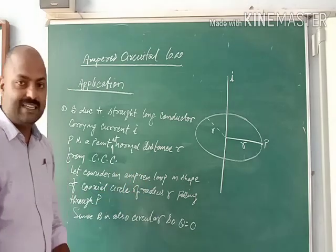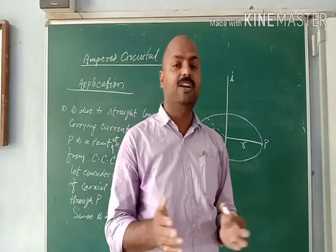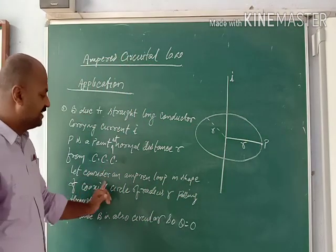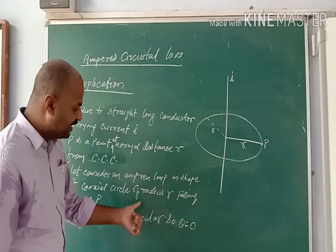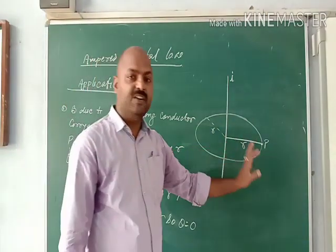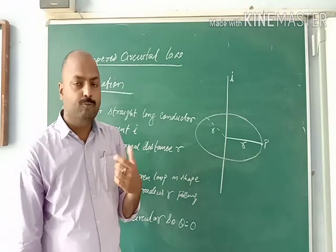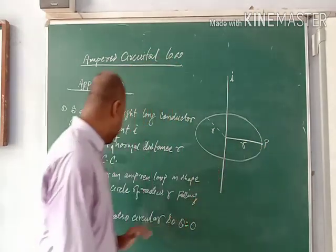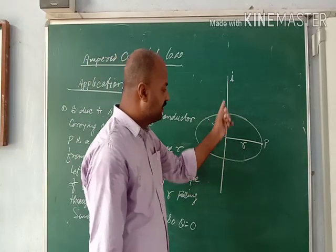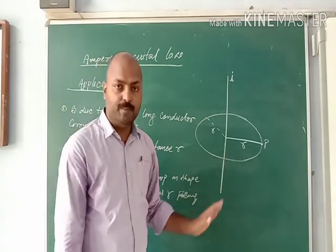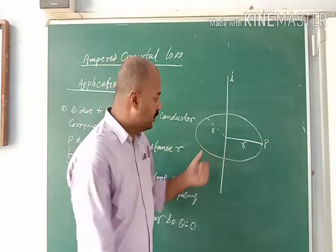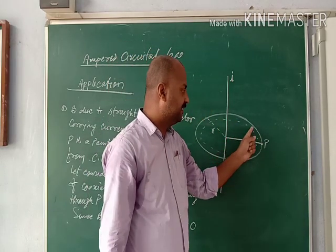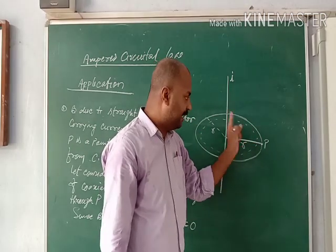Let's consider an Amperian loop. Just as we saw in the previous topic, we first imagine an Amperian loop around the current-carrying conductor. Here we consider an Amperian loop in the shape of a coaxial circle of radius R passing through point P. Since the magnetic field produced by the current-carrying conductor is also circular, the angle between the Amperian loop and the magnetic field is 0°, so cosθ = 1.